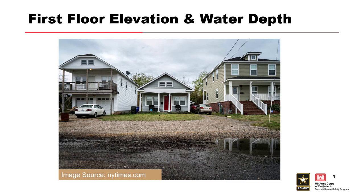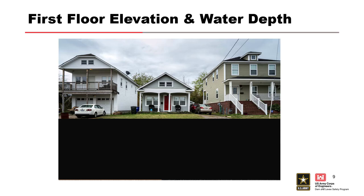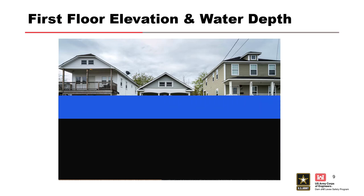As water rises, it first hits the first floor elevation of one structure — maybe a small amount — then continues rising to reach the first floor of a neighboring structure. This highlights how important it is to have correct structure attributes. Some depths and velocities may collapse one structure but not its neighbor, especially in communities where non-structural measures or structural raises have already been applied.